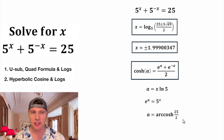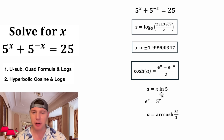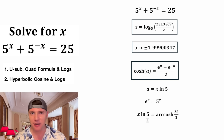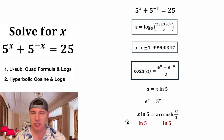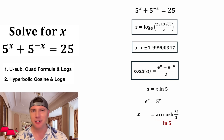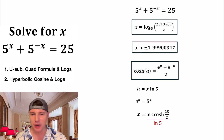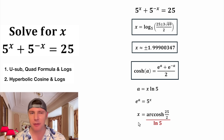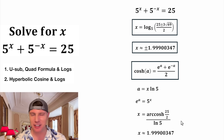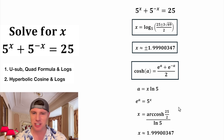On the right-hand side, we leave this as arc hyperbolic cosine of 25 over 2. Now we've solved for a, but we want x. So in the place of a, let's plug in x natural log of 5. Natural log of 5 is just a number, so we divide both sides by natural log of 5 — they cancel on the left — and now x equals arc hyperbolic cosine of 25 over 2 divided by natural log of 5. Plugging this into a calculator gives approximately 1.99900347, just like before.